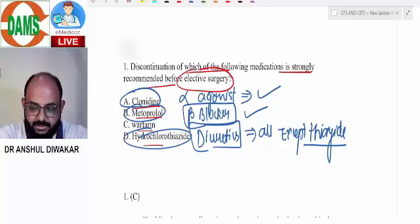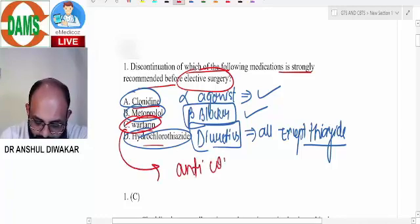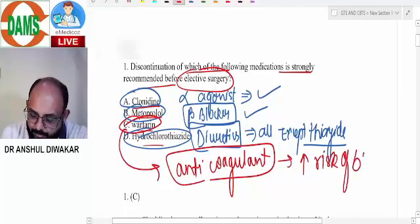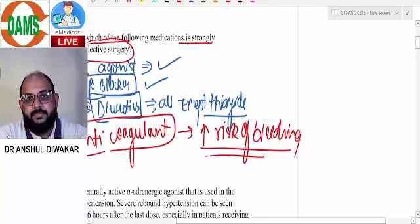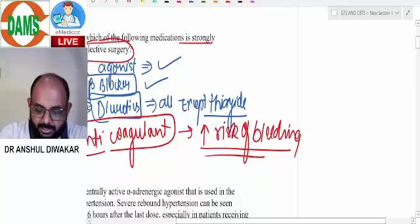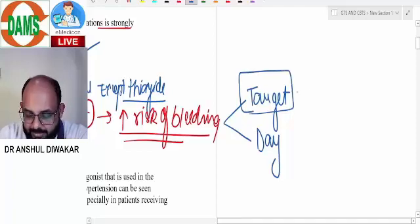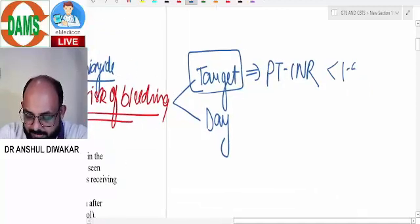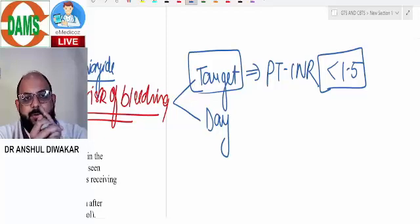We all know warfarin is an anticoagulant. An anticoagulant will always increase the risk of bleeding, and therefore you need to stop it before surgery. Warfarin will make the blood thinner, causing increased risk of bleeding. Now, how much to stop? There are two criteria: target-based criteria and day-based criteria. Target-based criteria is when the PT-INR becomes less than 1.5, that's when you can go ahead with surgery.